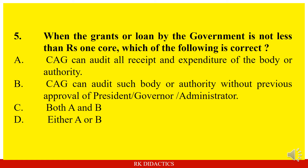Question: When the grants or loan by the government is not less than Rs. 1 crore, which of the following is correct? Option A: CAG can audit all receipts and expenditure of the body or authority. Option B: CAG can audit such body or authority without previous approval of President, Governor, or Administrator of the union territories. Option C: Both A and B. Option D: Either A or B. Answer: A is correct. B is not correct because it should be with previous approval. So the answer is A.